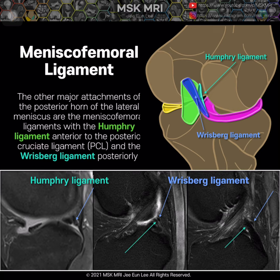This posterior oblique illustration shows the relationship of the meniscus femoral ligament and lateral meniscus and PCL, with Humphrey ligament anterior to the PCL and Wrisberg ligament posterior to the PCL. This meniscus femoral ligament originates from the posterior horn of the lateral meniscus and inserts onto the lateral aspect of the posterior medial femoral condyle.